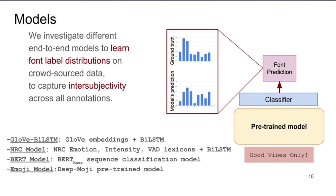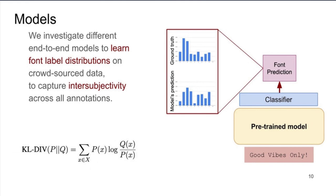In all models, we use label distribution learning to handle ambiguity in the annotations for this task. In order to do that, we use KL divergence as the loss function. KL divergence is a measure of how one probability distribution P is different from a second reference probability distribution Q.